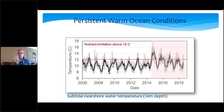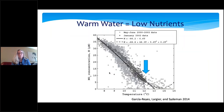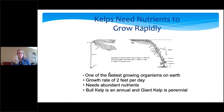We've had persistent warm water conditions — many of these warm waters have been above 12 degrees Celsius, which is a nutrient limitation for many of our algal species that form our ecosystems. Bull kelp itself needs water cooler than 12 degrees in order to get the nutrients it requires. Kelps are fast growing — two feet per day — annual organisms that need abundant nutrients to grow 60 feet in a season.